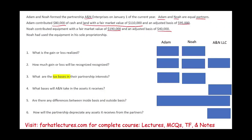The first question: what is the gain or loss realized? This means if Adam sold his land, what is the gain realized — what actually happened. Adam gave up his land. If Adam sold it, he would have sold it for $110,000 with an adjusted basis of $95,000, giving Adam a realized gain of $15,000. That is the realized gain — the consideration received minus the basis.